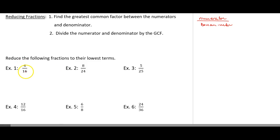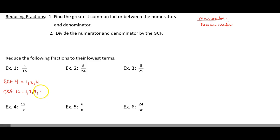Right down here, I look at 4 and 16. What are the factors of 4? 1, 2, and 4. For 16, you have 1, 2, 4, 8, and 16. So the greatest common factor between 4 and 16 is 4. I'm going to divide the numerator by 4 and the denominator by 4. What is 4 divided by 4? 1. What is 16 divided by 4? That is 4. So 4 over 16 reduces to 1 over 4.